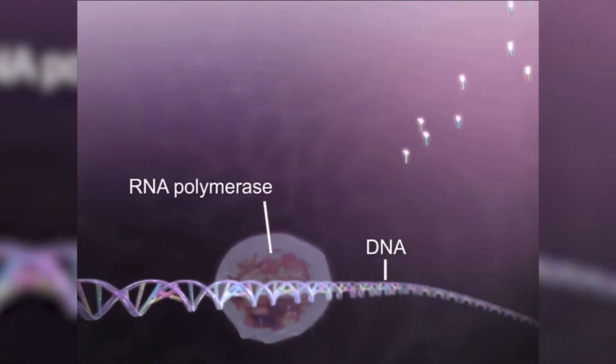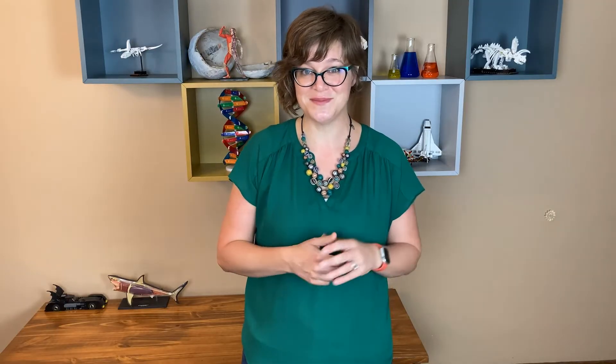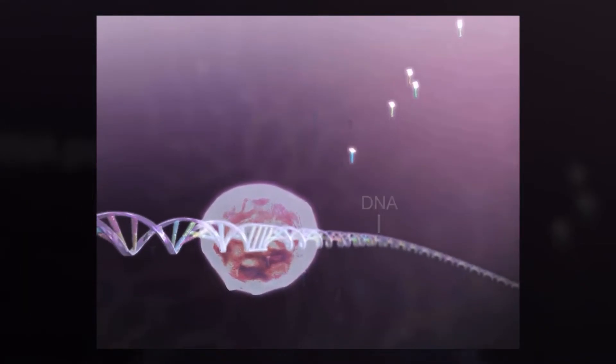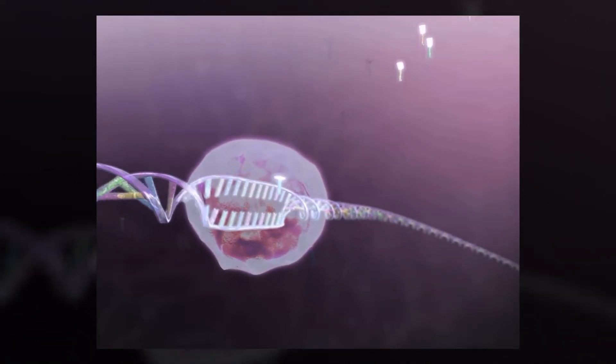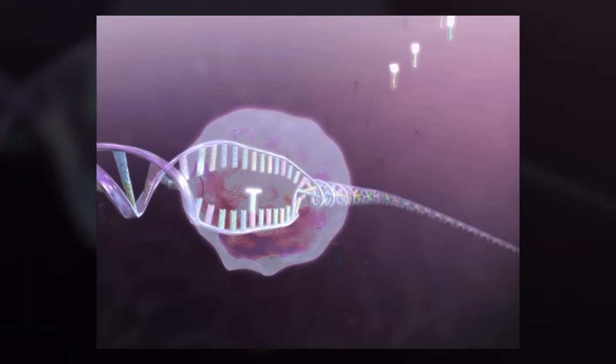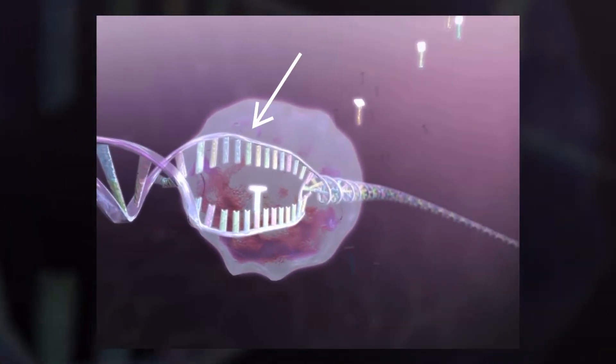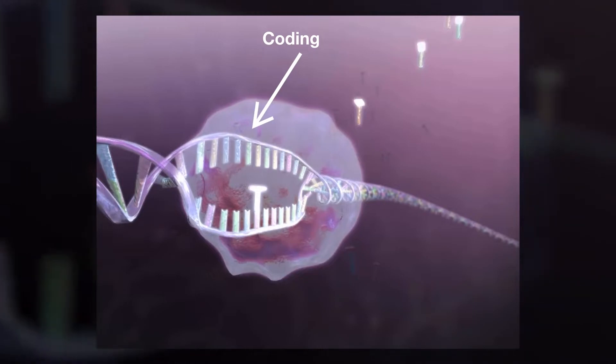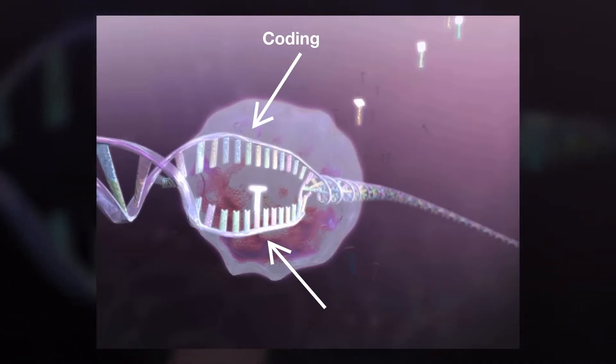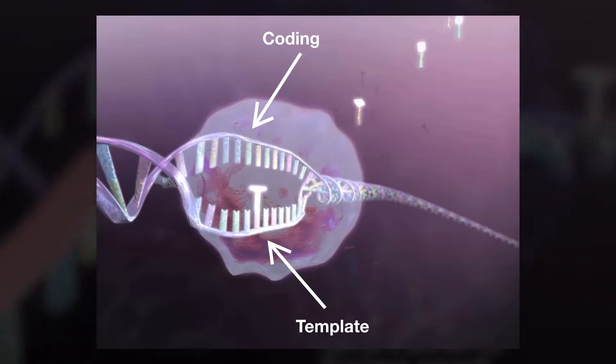We transcribe a single gene at a time, and the DNA code tells us where to start and stop. During initiation, the RNA polymerase binds to a specific sequence called a promoter. These promoters are unique for the different genes being transcribed, which allows us to only target the genes that we want to use. The polymerase unzips the DNA so that it can access the sequence of nitrogenous bases, separating the DNA into two strands. We call one of these the coding strand — the one we want to create a copy of — and the other the template strand, which is the one we're going to use to build that copy.